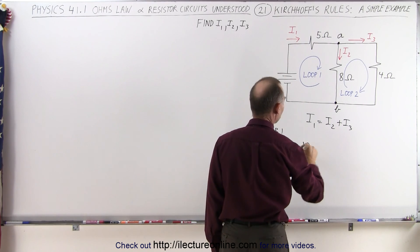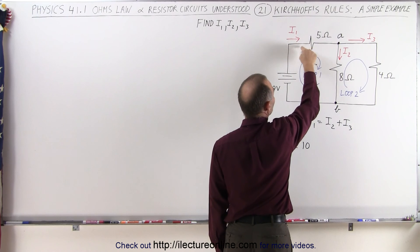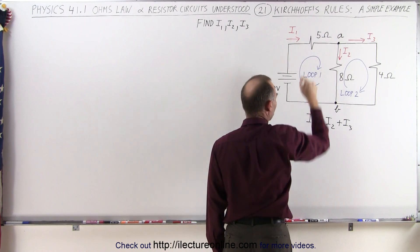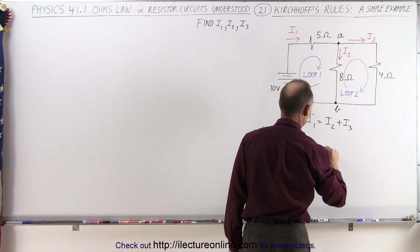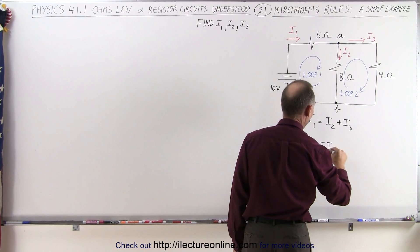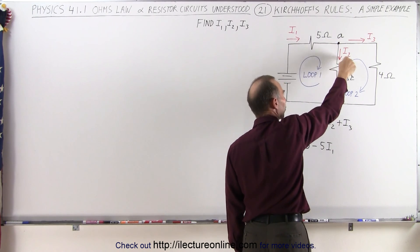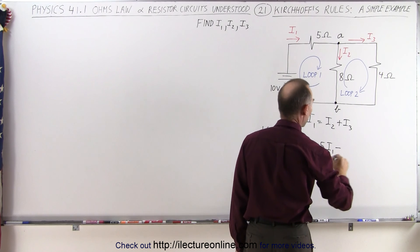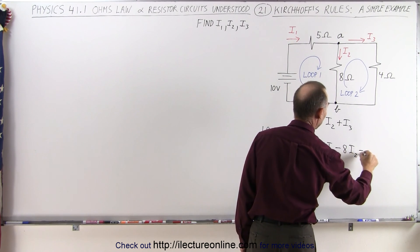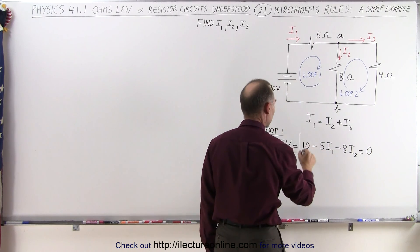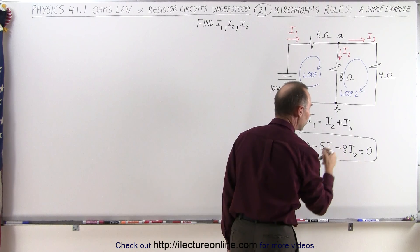So that's a plus 10 volt rise. Then we go across the resistor in the same direction as the current, that's a voltage drop, so minus the current I1 times the resistance, so we call it 5I1. Then we go across this resistor in the same direction as the current I2, so that's another voltage drop minus the resistance times the current I2, and that adds up to zero. So here's our second equation, and in this case, we have I1 and I2 in that equation.